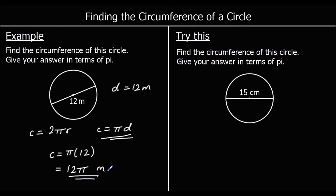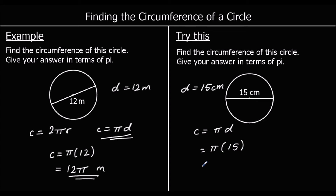One for you to try. This time we have a diameter of fifteen centimetres. Using C = πd: pi times fifteen, which we write as 15π. If you used C = 2πr with r = 7.5, you'd still get the same answer. So the answer is 15π centimetres.